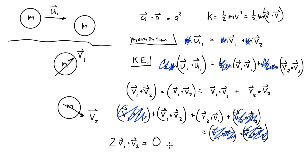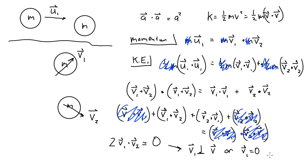The only ways for the dot product of two vectors to be zero are for them to be perpendicular, or for one of them to be zero. If one of them is zero, you have the one-dimensional head-on case where all the momentum is transferred. But if it's not a head-on collision, then v1 and v2 are both nonzero, so they must be perpendicular.